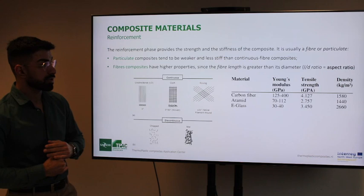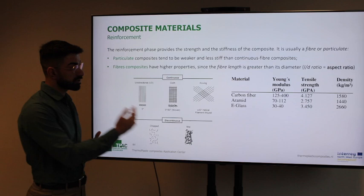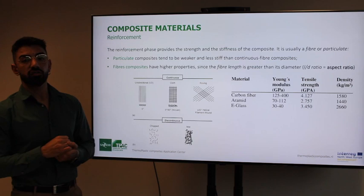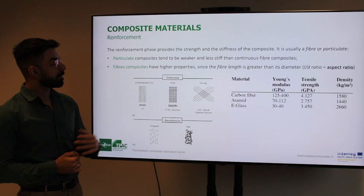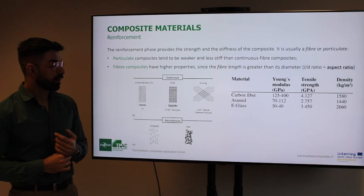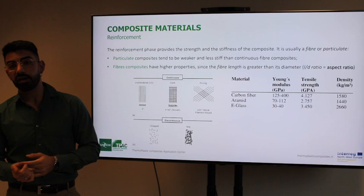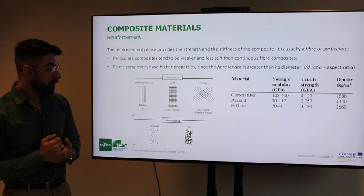For fiber composites, we can distinguish between continuous and discontinuous fiber composites. Continuous fibers can be unidirectional — where properties are very high in the longitudinal direction but not in the transverse direction — woven in a classical cross-ply or woven mat, or a roving filament-wound composite. If fibers are placed discontinuously and randomly, we call these chopped fiber composites, chopped strand mat (CSM), as seen in the graph.